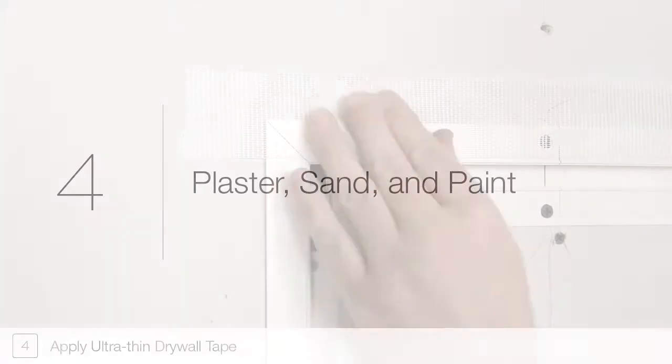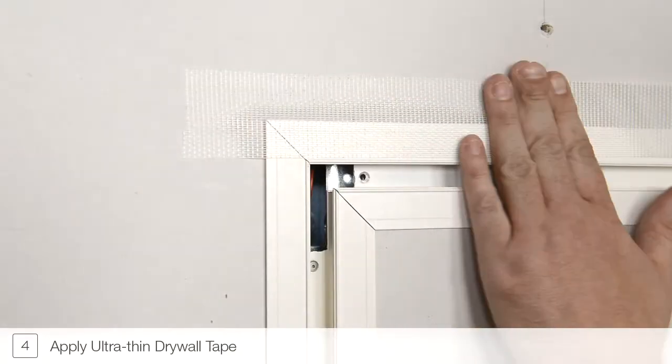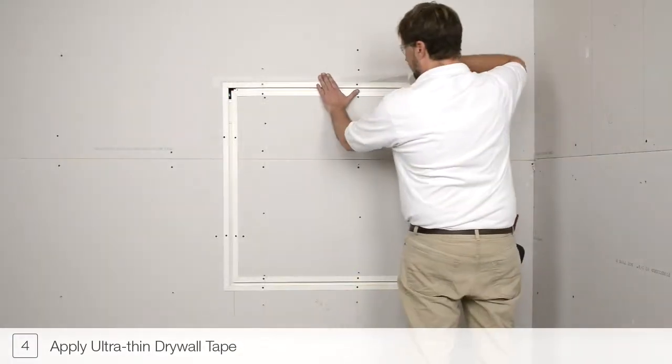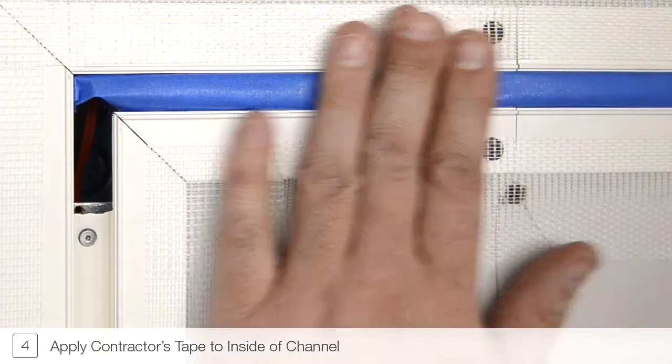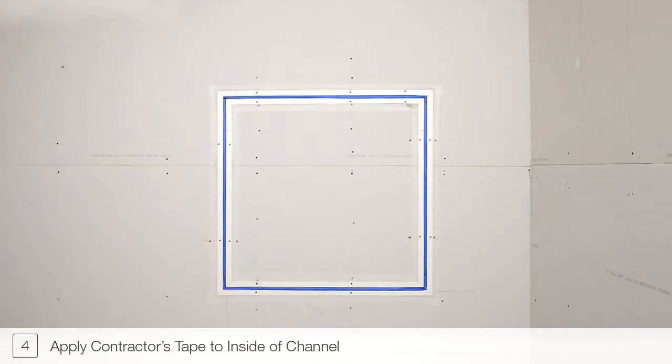Step 4. Apply ultra-thin drywall tape to the TrueLine channel. Do not overlap sections of the drywall tape. Mask the interior of the channel using contractor's tape. This will help prevent dust or debris from entering the channel.